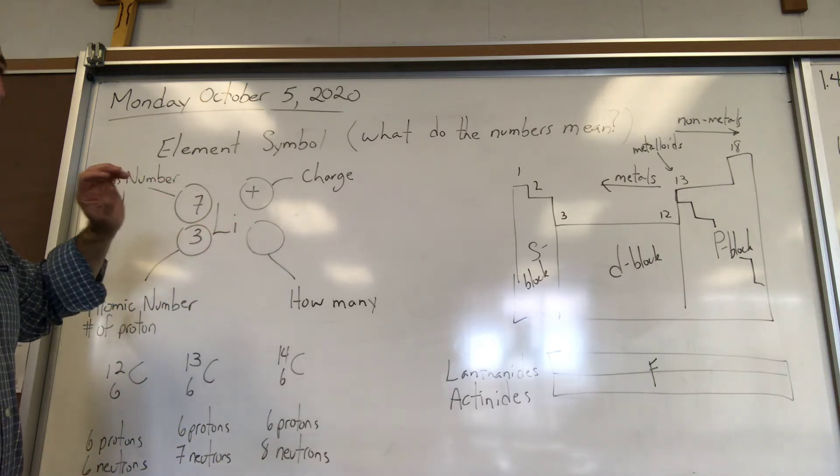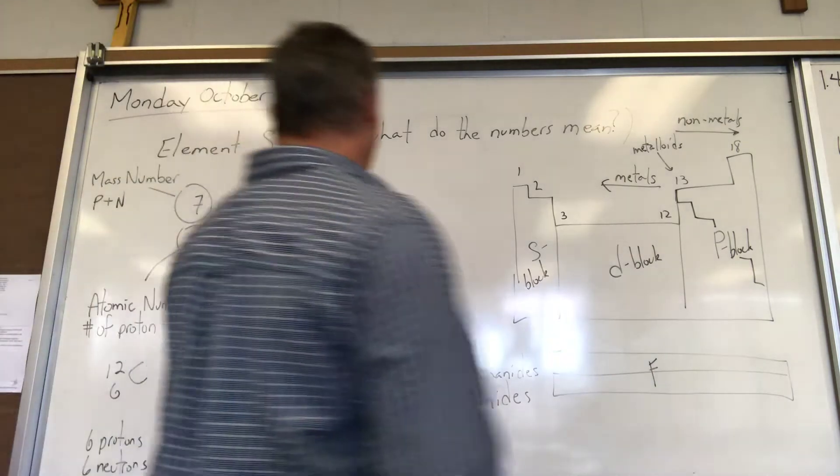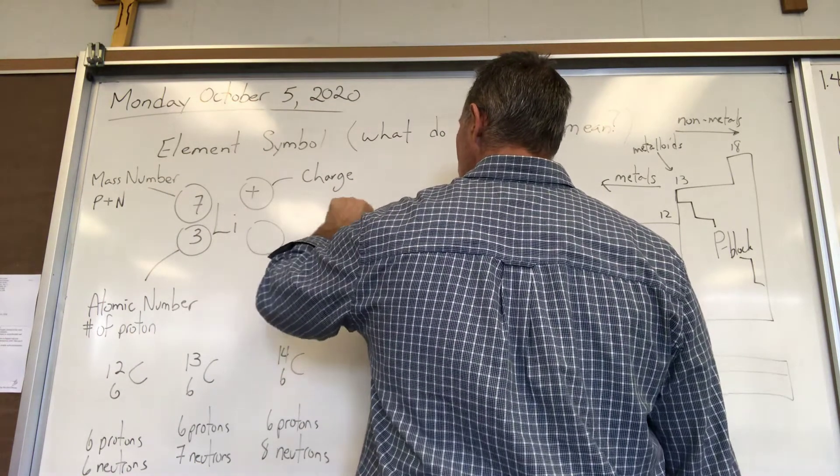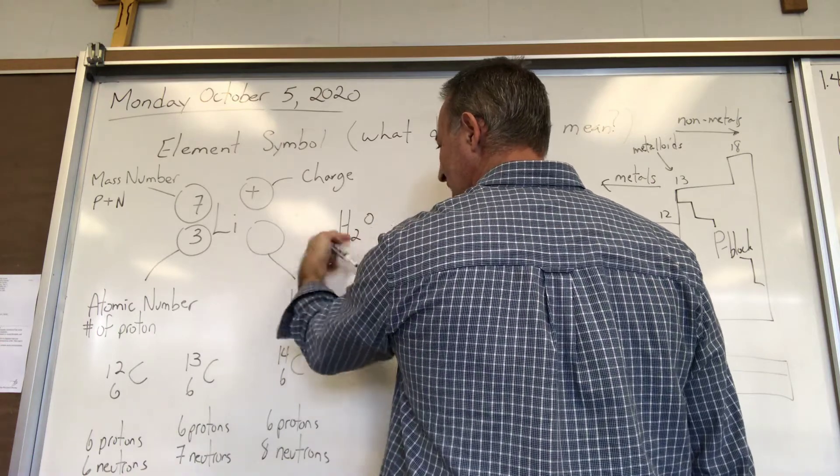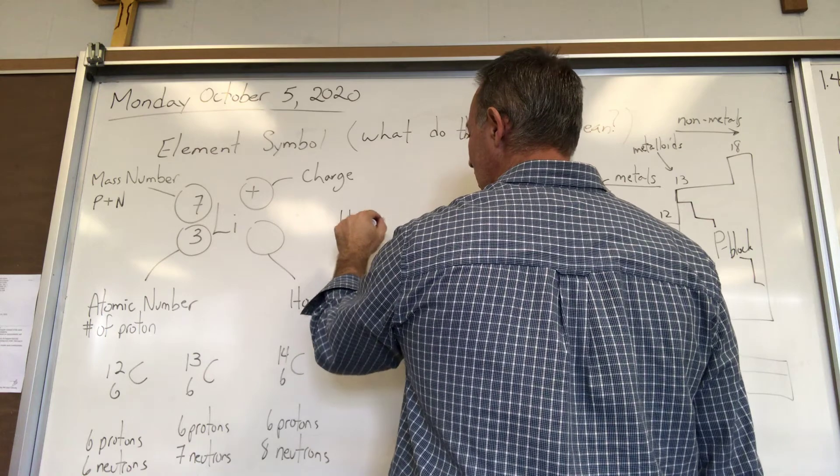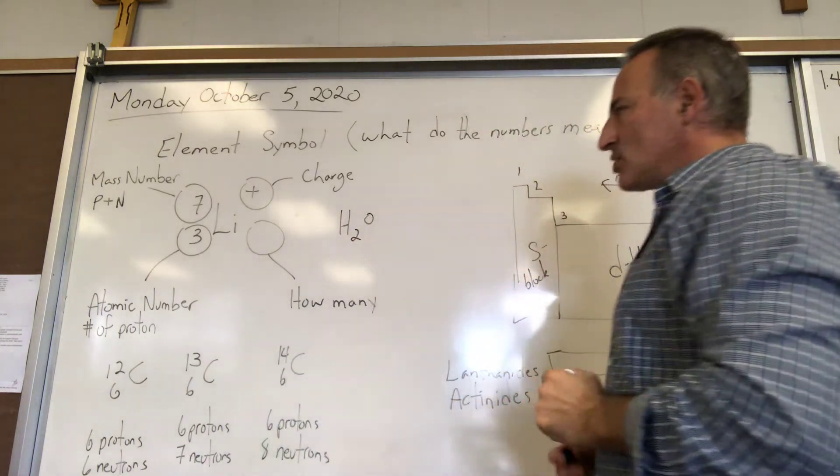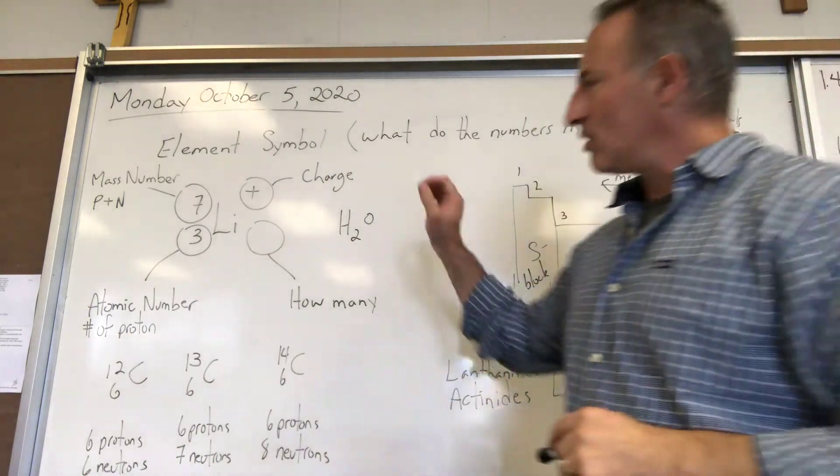For example, if you write H2O, the 2 applies to the hydrogen. You see it's on the bottom right of the hydrogen symbol—means there's two hydrogens there. If there's one, you don't bother writing it; it's understood.